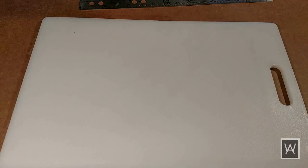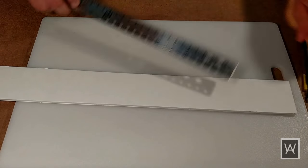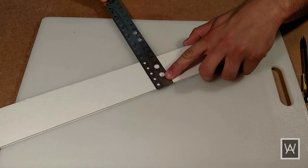Take your foam board and cut a long strip 2 1⁄2 inches wide.